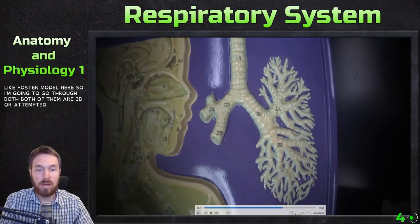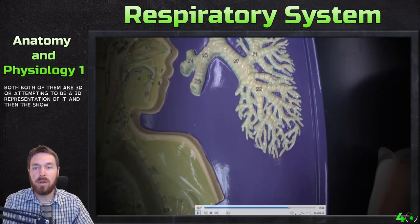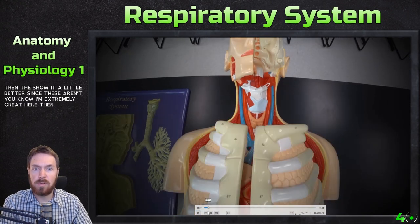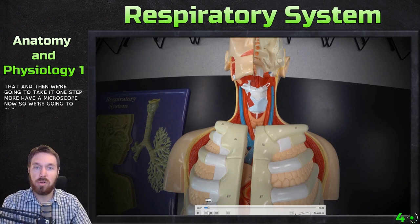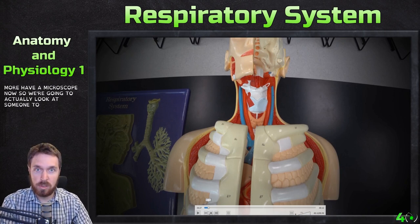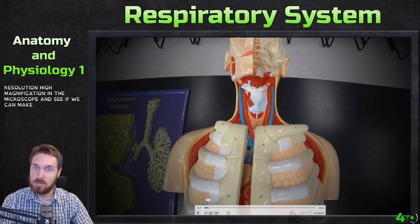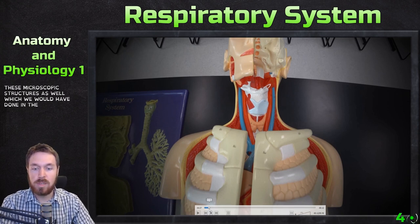Since these models aren't extremely detailed, I'll also use 3D Organon to show structures better. Then we're going to take it one step further — I have a microscope now, so we're going to actually look at some lung tissue at high magnification and see if we can make out some of the microscopic structures, just as we would have done in the laboratory.